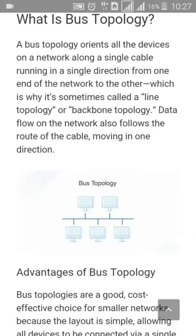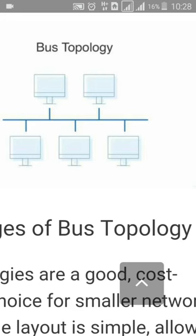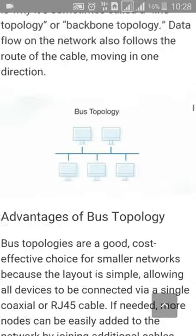Next is bus topology. Bus topology connects all devices on a network along a single cable running in a single direction from one end of the network to the other. All other devices are attached within that main cable. This is also called line topology or backbone topology. Data flow on the network follows the route of the cable, moving in one direction. In the diagram, the main cable has all devices attached within it.